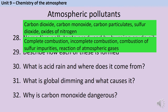Crude oil usually has sulphur impurities in it, so if those aren't removed, then when the oil or fuel is burned, we also produce sulphur dioxide. And because combustion engines get so hot, even though the nitrogen in the atmosphere is really quite unreactive, at a high enough temperature it will start to react with the oxygen in the atmosphere, and that's how we get these oxides of nitrogen.